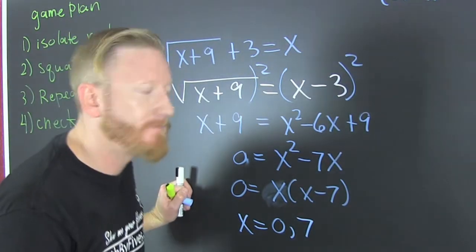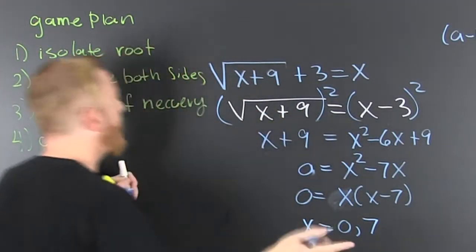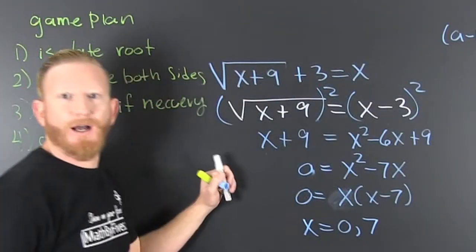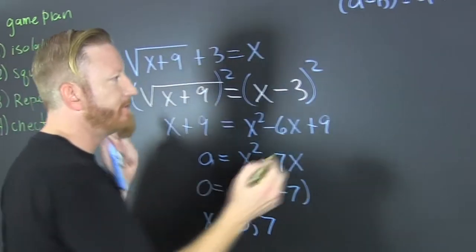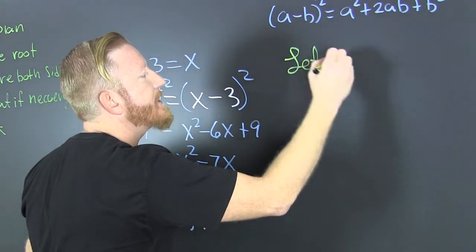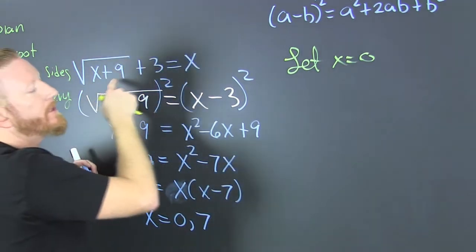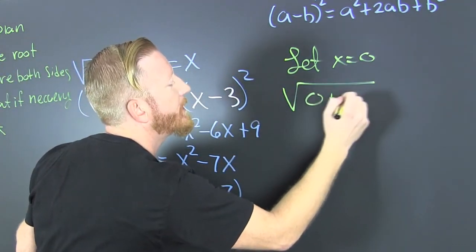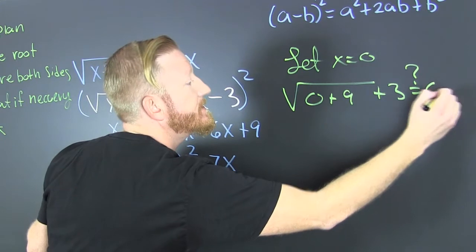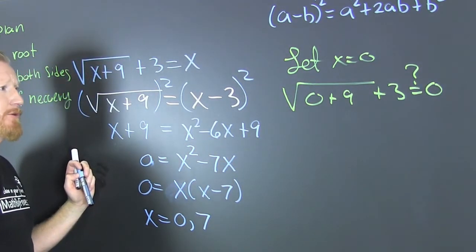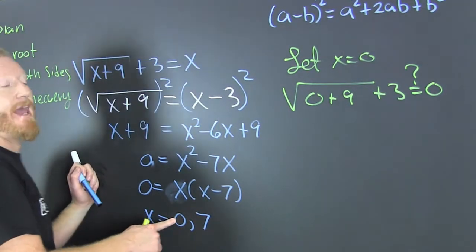But then you have to check it. You go and throw those values back into the original equation. We have to check because whenever we square both sides, you could be introducing extraneous roots.